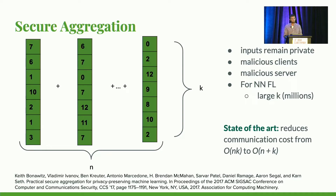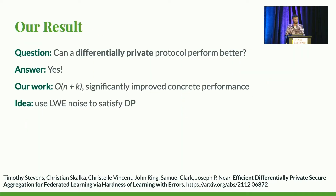This problem has been solved before. The naive solution uses additive homomorphic secret sharing, and it has a communication cost of n times k. The state-of-the-art reduces that communication cost to n plus k. That said, that state-of-the-art protocol does have a fair amount of overhead that goes along with it, especially in the case of dropped-out parties.